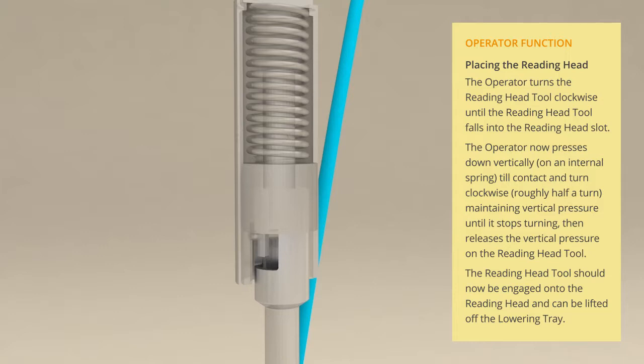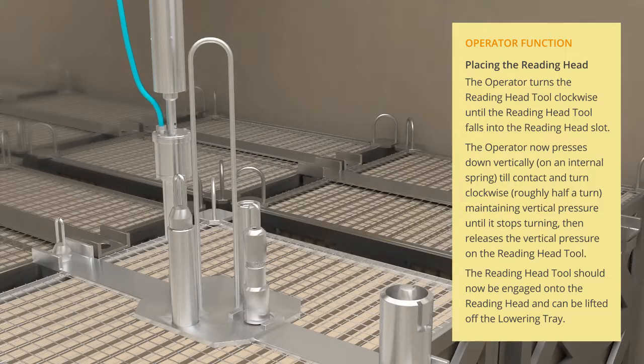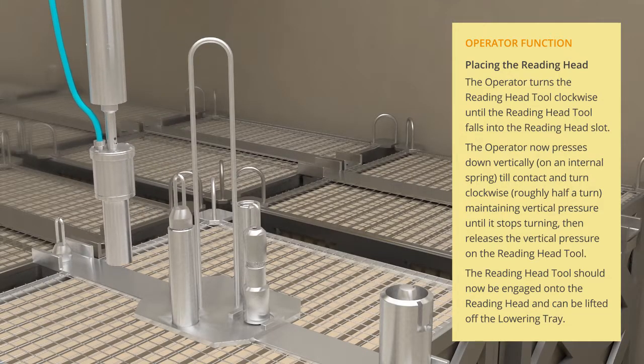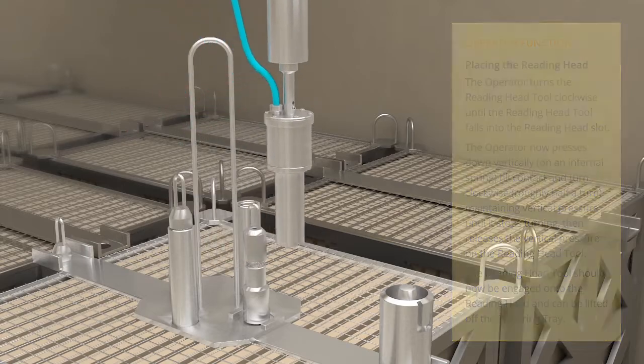The operator then releases the vertical pressure on the reading head tool. The reading head tool should now be engaged onto the reading head and can be lifted off the lowering tray.